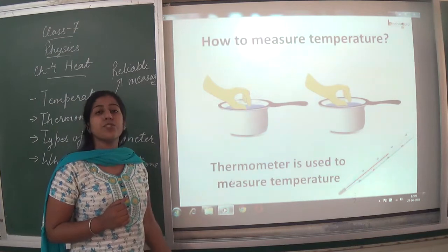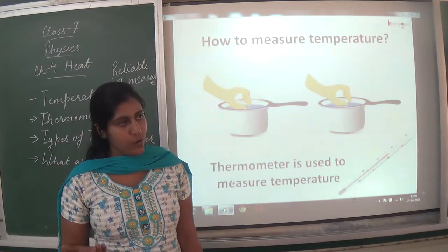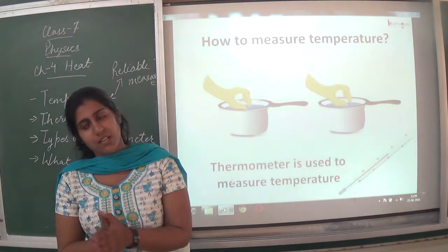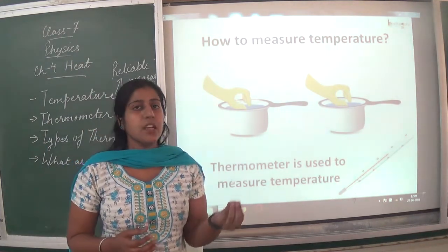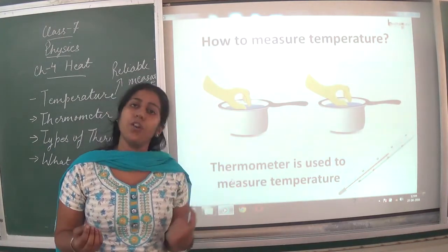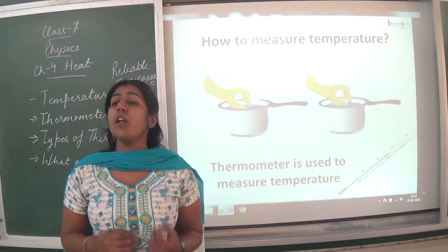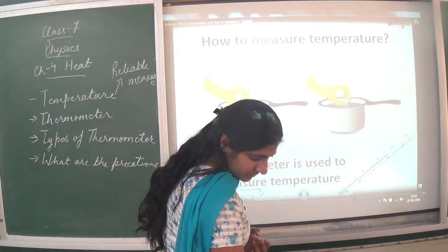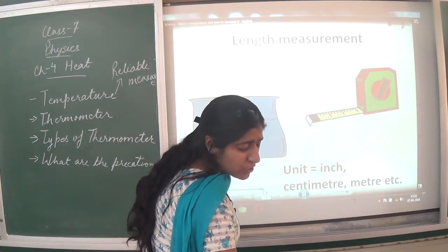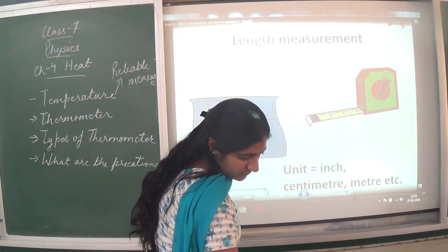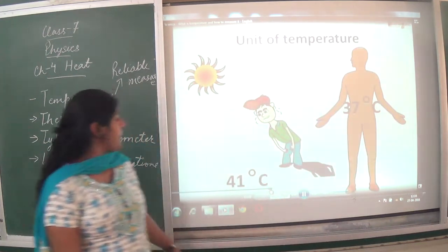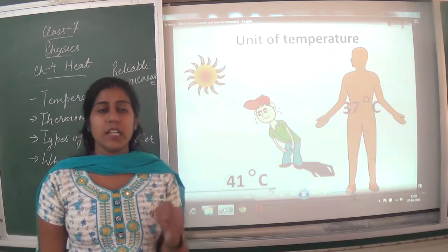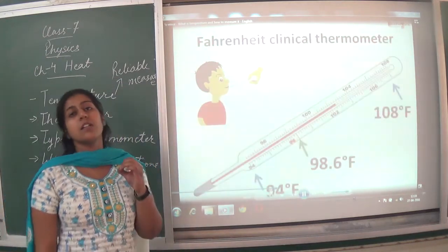A thermometer is used to measure temperature, whether it is hot or cold. Every thermometer has different criteria to measure hotness or coldness — not every thermometer is capable of measuring both. The unit of temperature is degree Celsius. The SI unit is degree Celsius.